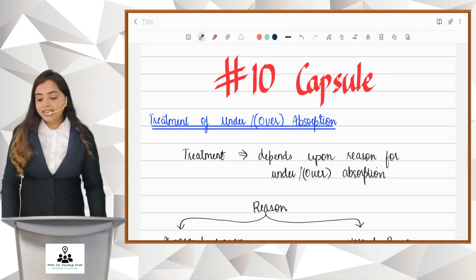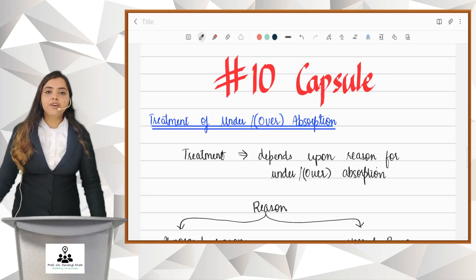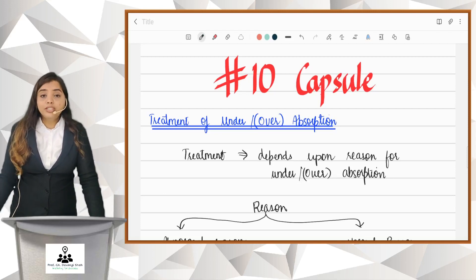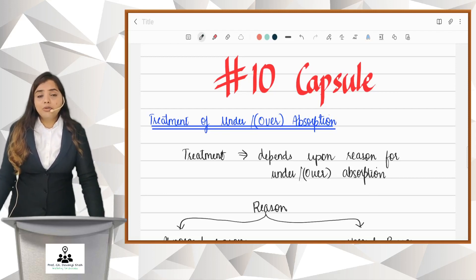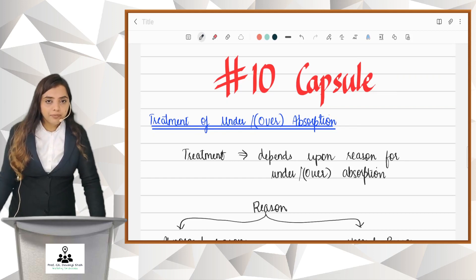Let's begin with Capsule 10, which is for treatment of under/over absorption. In the previous capsule we studied how to calculate the under/over absorption. Now let us study its treatment.